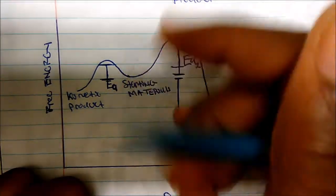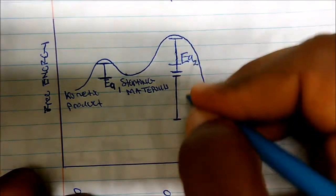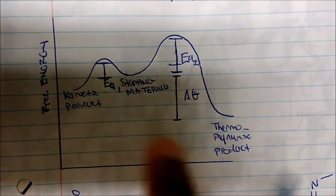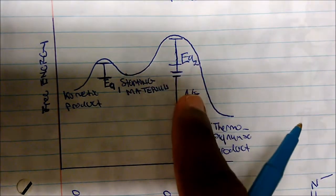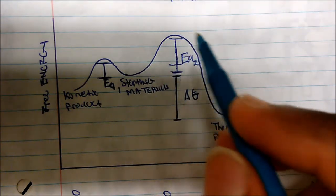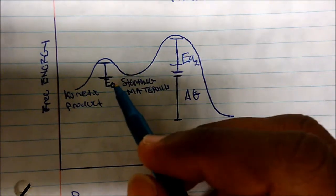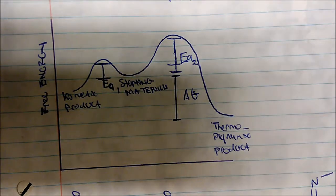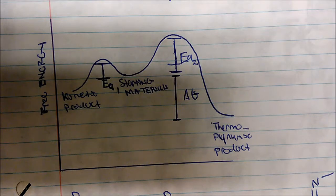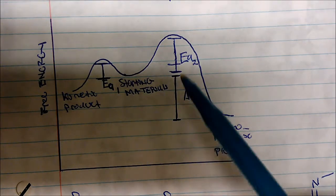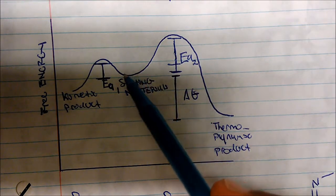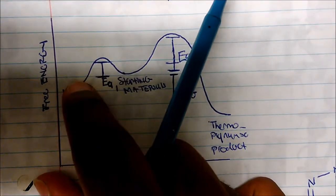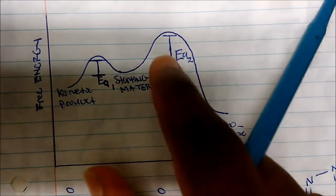Looking at the energy diagram: this is activation energy 2, this is activation energy 1, and there's the delta G — the free energy. Notice that to get to the thermodynamic product, you have to climb a huge activation energy barrier versus the kinetic product. This is why the kinetic product is run at lower temperatures, and the reaction usually occurs faster than the thermodynamic product, because its activation energy barrier is very small in comparison.